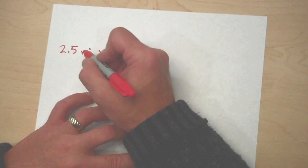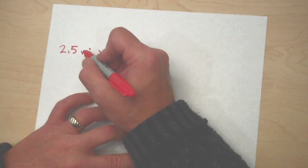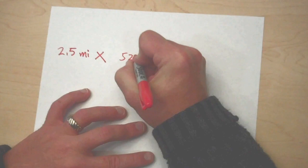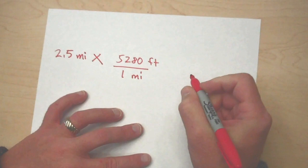Well, we want to be able to cancel out the miles unit. So if I have miles at the top here, miles should be at the bottom. So we want to put down 5,280 feet in one mile. That means when I multiply them together, I can cancel out the miles and I'm left with feet.